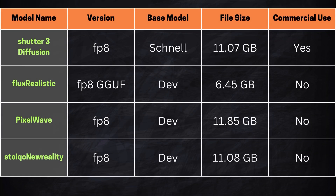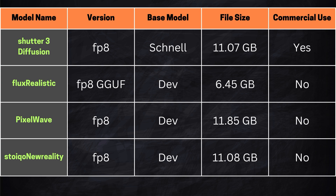After testing many images, here's my summary. If you have enough video memory, Pixel Wave and Stoico New Reality are the top choices. Pixel Wave delivers the best image quality overall, but struggles with LoRA compatibility, so if you plan to use LoRA, I'd recommend going with Stoico New Reality instead. That said, Pixel Wave might work with specific LoRAs — it just needs more testing to confirm. For those working with limited VRAM, the GGUF version of Flux Realistic is an excellent option — its performance is not far behind Stoico New Reality and it's incredibly efficient with its small file size. However, keep in mind that none of these models come with a commercial license. While Shutter 3 Diffusion can be used commercially for free, its quality is disappointing. If you need a model for commercial use, explore other models fine-tuned on the Flux Chanel base. That's it for my test — feel free to share anything new you discovered in the comments. Thanks for watching, and I'll see you in the next video.